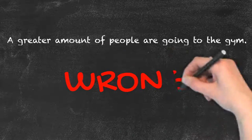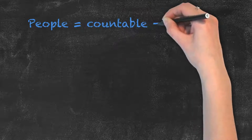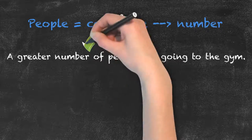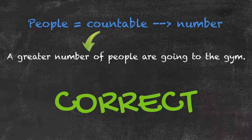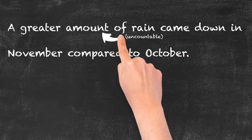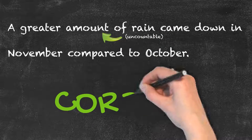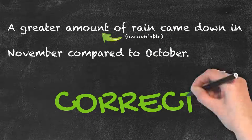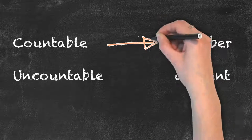For example: 'A greater amount of people are going to the gym' — wrong. You can count people, so that's why we need to use number instead of amount. Correct: 'A greater number of people are going to the gym.' Another correct example would be: 'A greater amount of rain came down in November compared to October.'